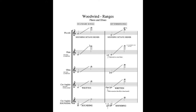Then we have the English horn, or cor anglais, which has a lower range than the oboe, so it sounds better below middle C. It sounds a fifth lower than written — it's a transposing instrument — and we can get down to E, or in some cases E-flat depending on the key extension of the instrument. It's useful for getting a nice sound below the oboe, and it still has a lot of weight down there.